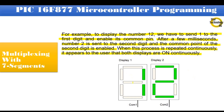You can see in the figure. If we want to display 12 on the 7 segment display, first we have to send number 1 to the first digit, enable its common pin, and disable digit 2 common pin. After a few milliseconds, number 2 is sent to the second digit, the common pin of the second digit is enabled, and digit 1 common pin is disabled. When this process is repeated continuously, it appears to the user that both displays are on continuously.